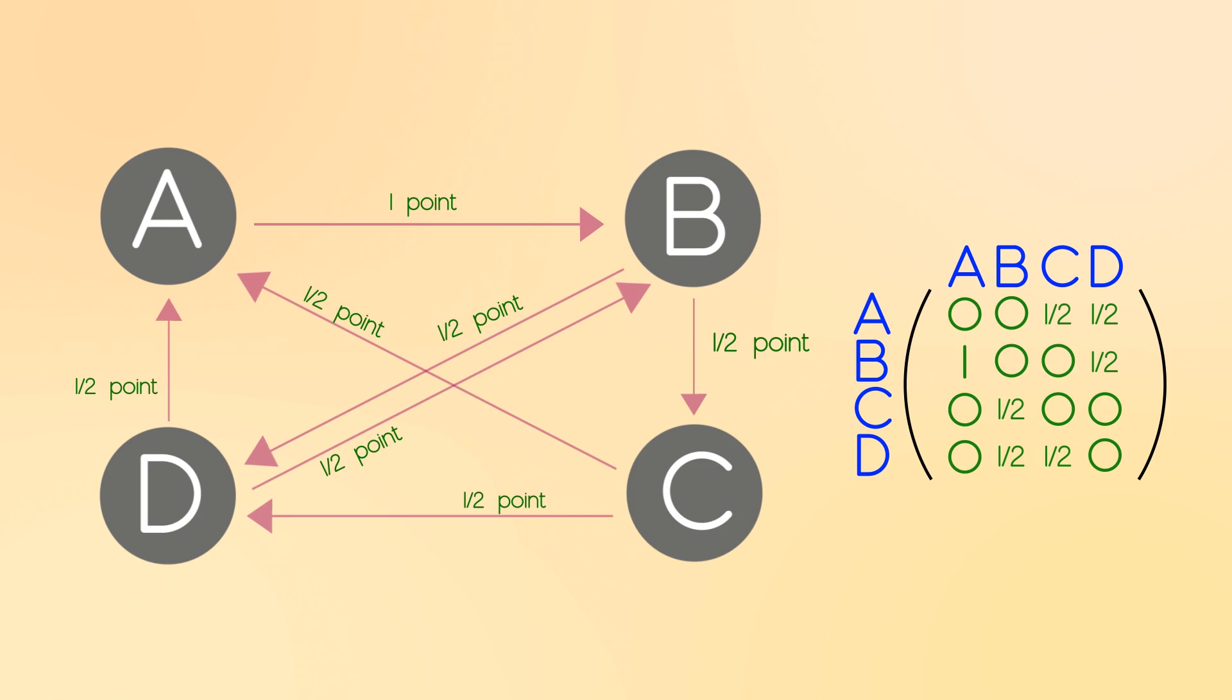The rows on the other hand tell us who got the endorsements. Like site A got two endorsements, half a point from C and same from D, but nothing from the rest. Site B received one point from A and half a point from D, but none from the rest. And here you see the lowest ranked site, site C, got only that one endorsement from site B.